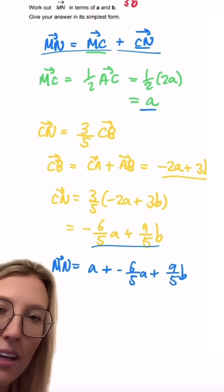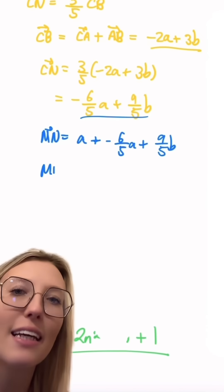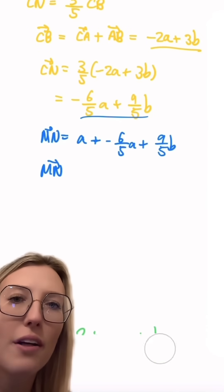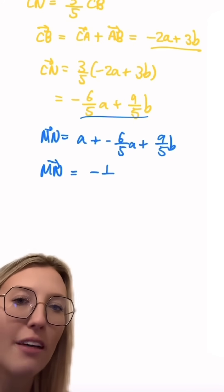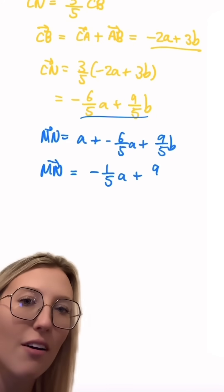If we just go ahead and simplify this we're going to be left with MN equaling minus one fifth a add 9 over 5b and that will be our final answer.